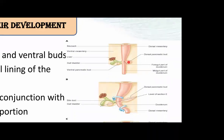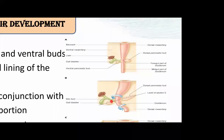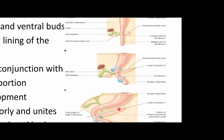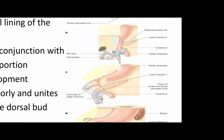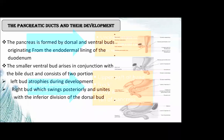The pancreas arises as larger dorsal and ventral pancreatic bulges. The left ventral pancreatic bulge undergoes atrophy. The right ventral pancreatic bulge rotates to join the inferior portion of the dorsal bulge. The ventral pancreatic bulge forms the uncinate process and lower part of the head. The dorsal pancreatic bulge forms the neck, body, and tail.